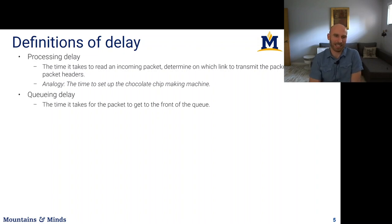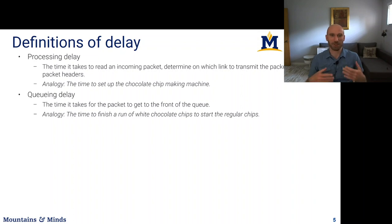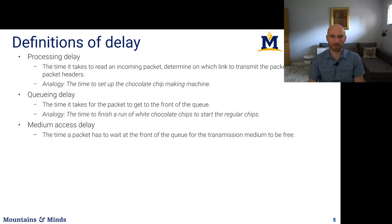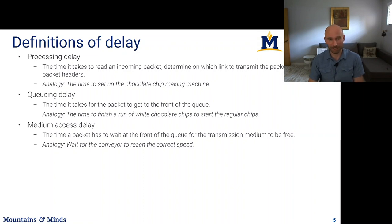Queuing delay is the time it takes for a packet to reach the front of the queue — in the cookie analogy, this is the time to finish a run of white chocolate chips before starting the regular dark chocolate chips, waiting for the dark chocolate to reach the front of the funnel. Medium access delay is the time a packet must wait until the transmission medium is free — analogous to waiting for the conveyor to reach the correct speed, or waiting for the previous row of chocolate chips to move away.